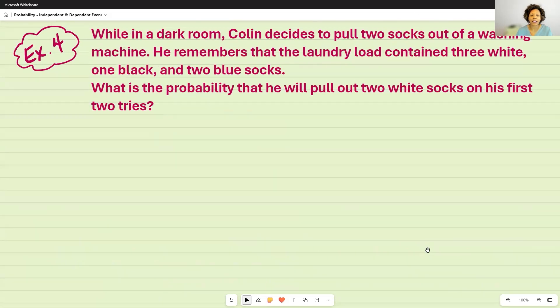The last example, while in a dark room, Colin decides to pull two socks out of a washing machine. He remembers that the laundry load contained three white, one black, and two blue socks. What is the probability that he will pull out two white socks on his first two tries?